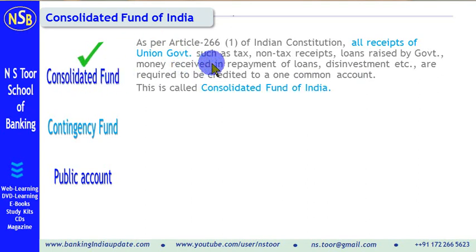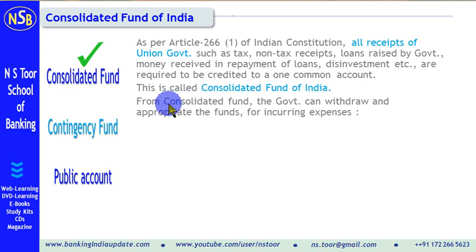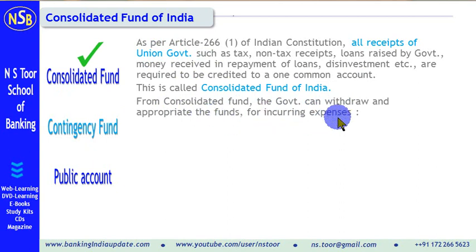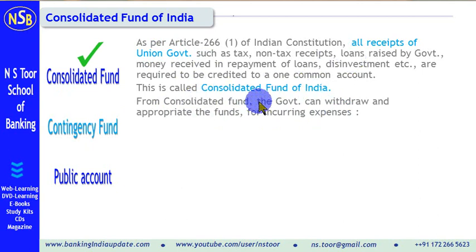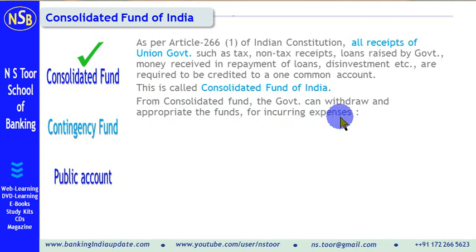From the Consolidated Fund, the government can withdraw and appropriate the funds for incurring expenses. The government withdraws the money and appropriates those funds, making use of them for incurring various types of expenses.